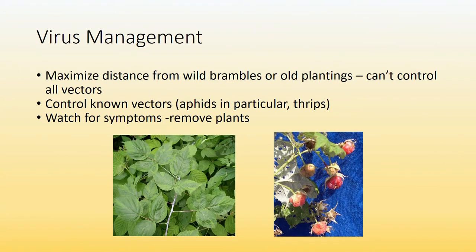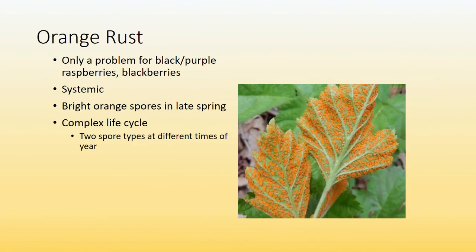For management of viral diseases: you want to maximize the distance from wild brambles or older plantings, and control vectors such as aphids in particular, as well as thrips. Watch for symptoms and remove plants. Lastly, I wanted to touch briefly on orange rust, which is a problem for black and purple raspberries, and some blackberry cultivars as well.